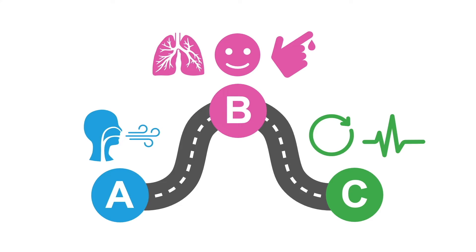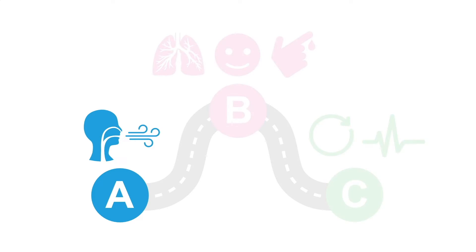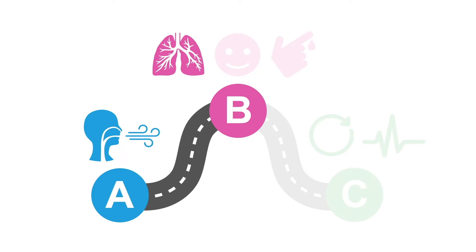Looking at our ABC roadmap, the airway can be affected by prolonged hyperventilation, making the patient tired. Their breathing can be supported with oxygen, but let them hyperventilate. This will help prevent worsening acidemia.